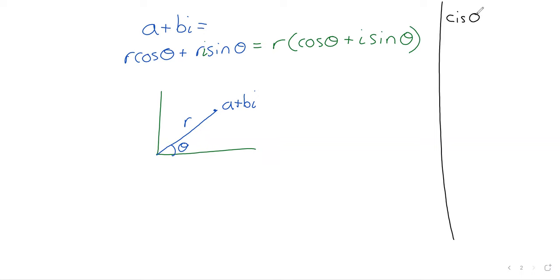It introduces this cis notation, and this is shorthand for the cosine of theta plus I times the sine of theta.